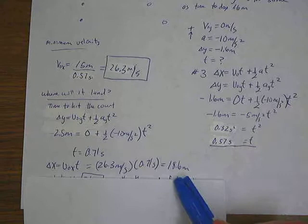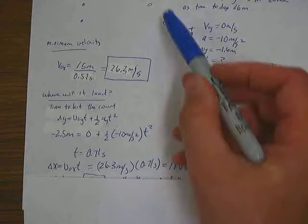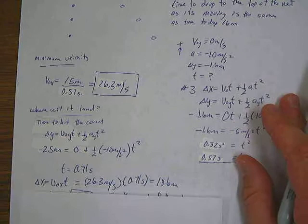So if I multiply that by my constant sideways speed of 26.3, then it tells me that in that time, while it's moving sideways, it's going to go 18.6 meters.